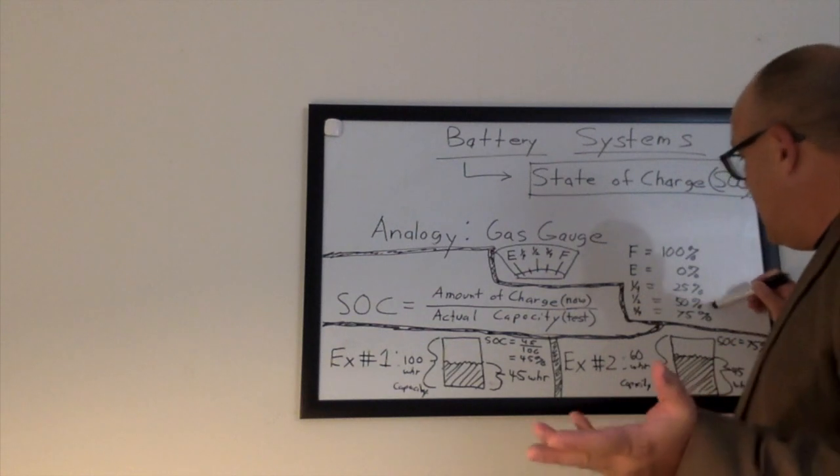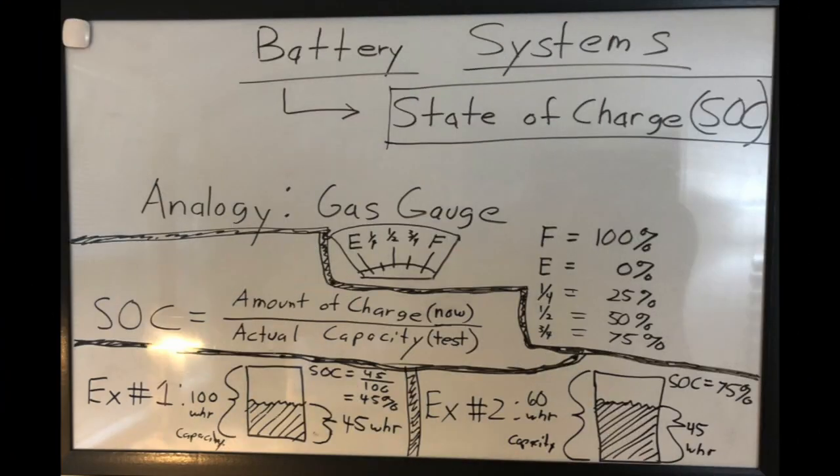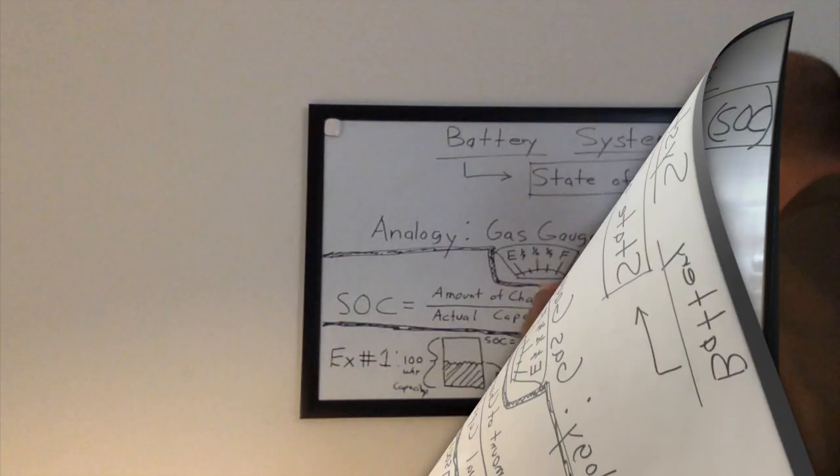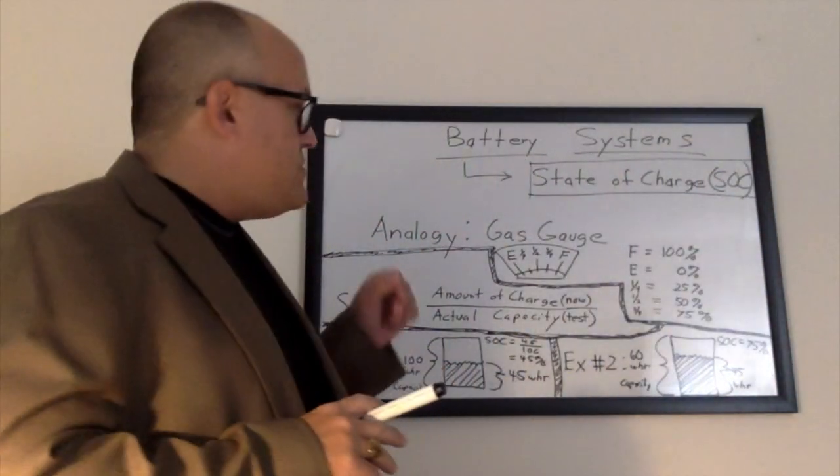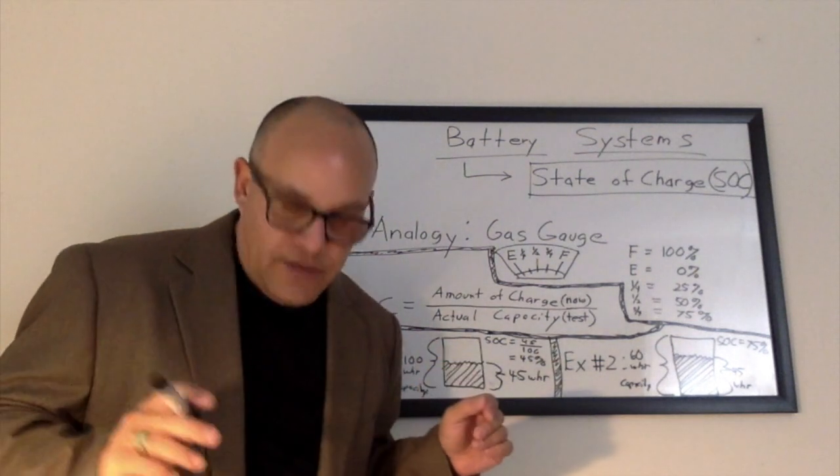But just quickly on a percentage level: full is 100%, empty is 0%, one quarter is obviously 25%, one half is 50%, and three quarters of a tank is 75%. So that's very similar or almost the same thing as what state of charge is.